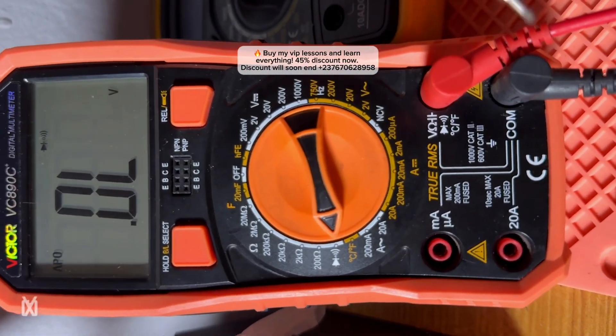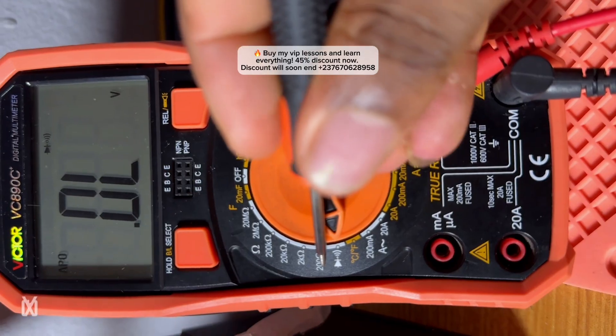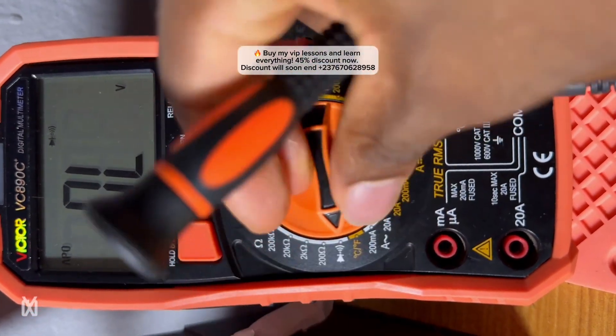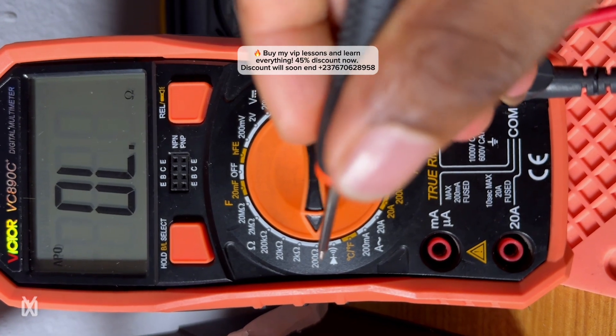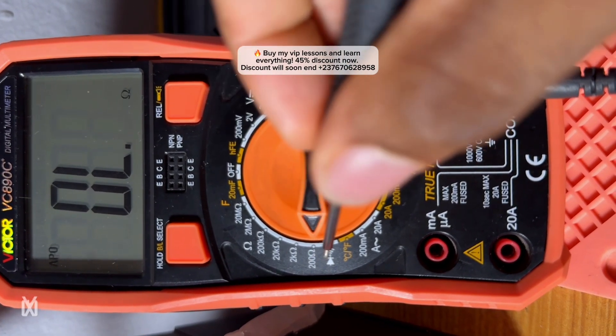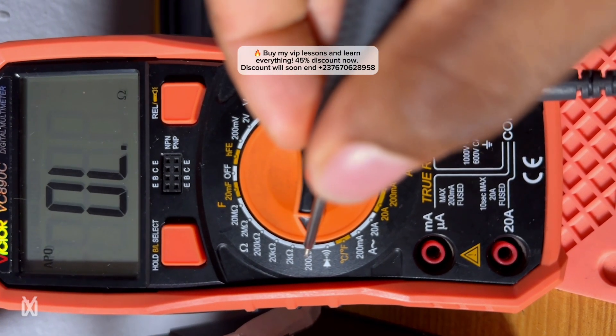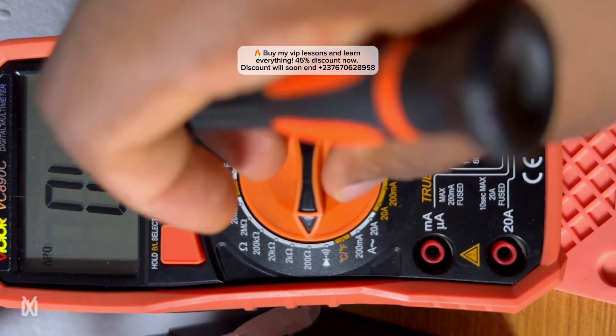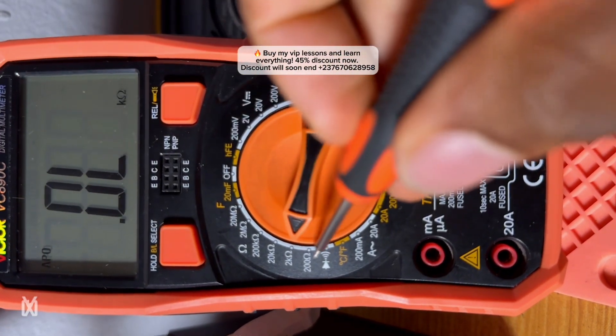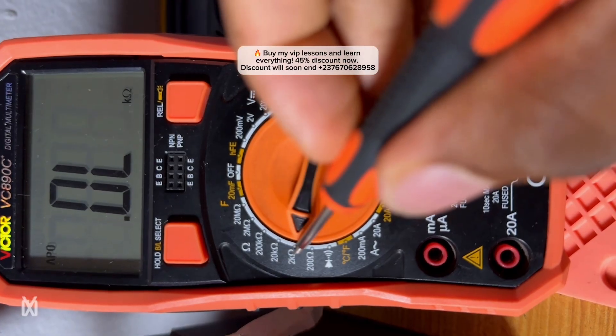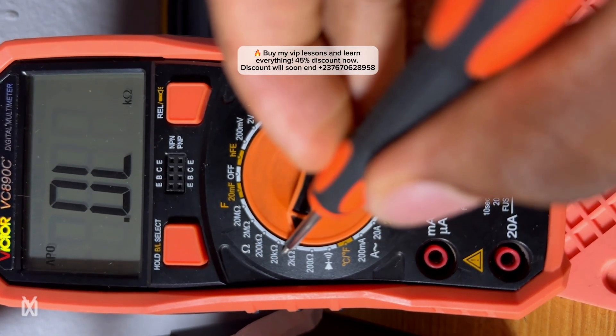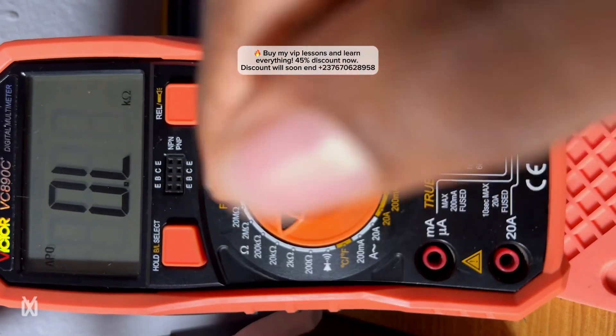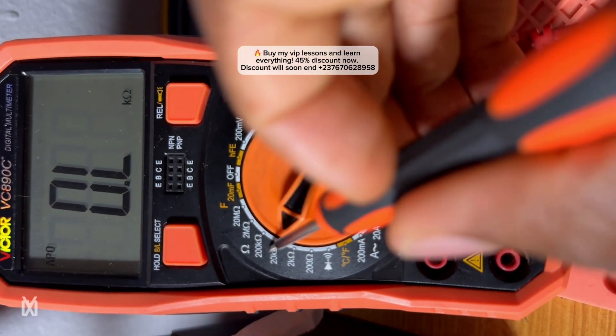If you check right here, you will see that we have the 200 ohm range. So this 200 ohm range, you can test resistors between 1 ohm to 200 ohms. From 200 ohm to 2 kilo ohm resistors, you can test them from here, and from 2k ohm resistors to 20k ohm resistors, you can test them here.